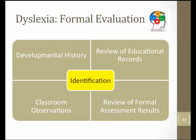When moving toward identification for dyslexia, consider a four-square approach. Starting at the bottom left: first, classroom observations should be conducted as soon as red flag areas are noted through the dyslexia screener. Second, conduct a developmental history of the student — the red flag screener and a parent interview are valuable resources. Third, a review of educational records is essential so evaluators can identify patterns of difficulty related to red flag areas. And finally, a review of formal assessment results. Diagnostic reasoning is essential to diagnosis.